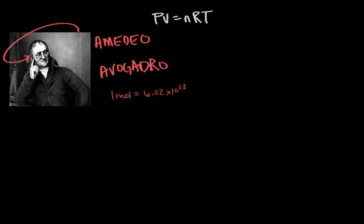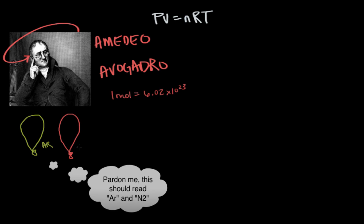For instance, if you filled up four balloons to exactly one liter at 25 degrees Celsius with different gases - a green balloon with argon, a pink balloon with nitrogen, a blue balloon with hydrogen, and a yellow balloon filled with methane.